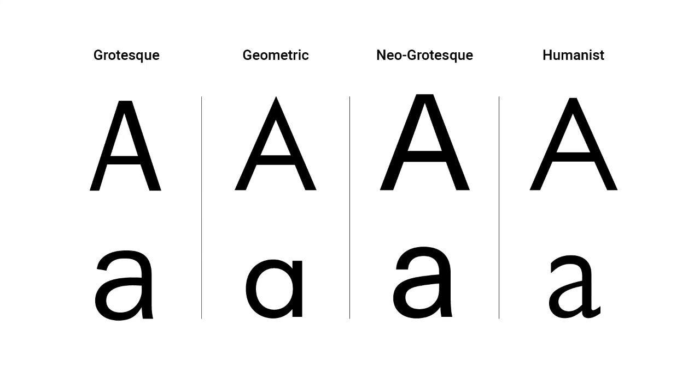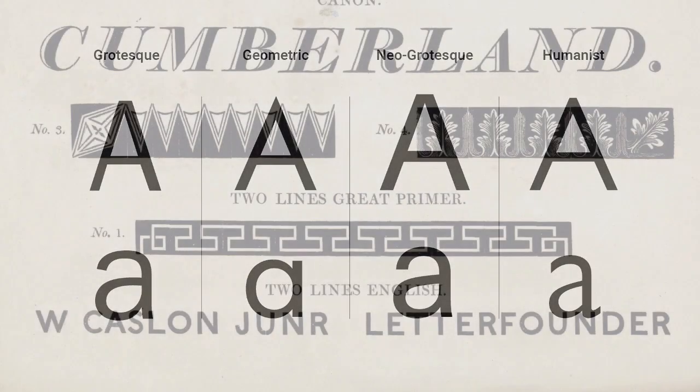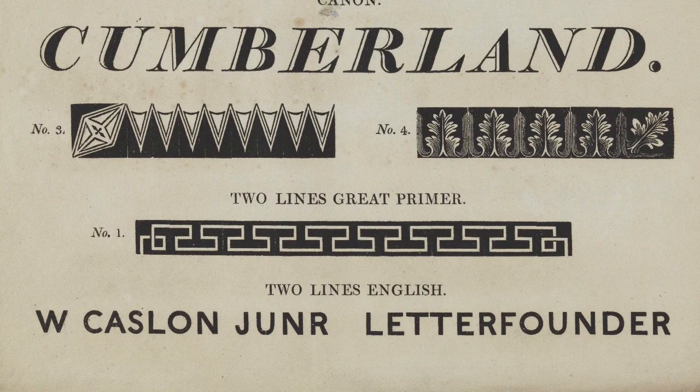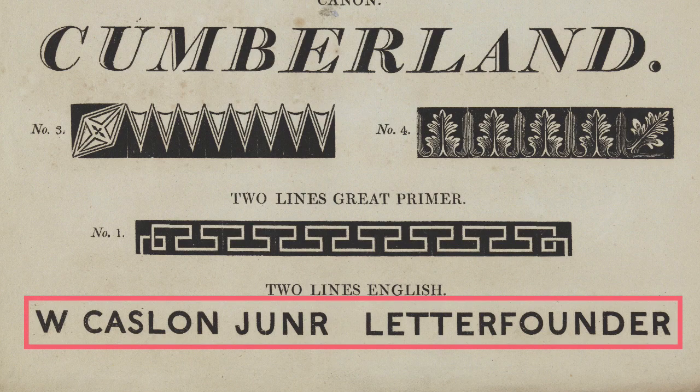Sans serif fonts started developing slowly before the 18th century, but weren't used widely. In 1816, William Castlen IV created a sans serif typeface called Two Lines English Egyptian.